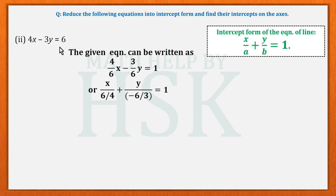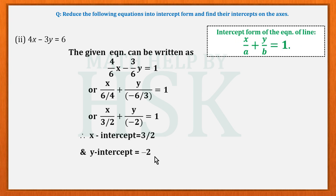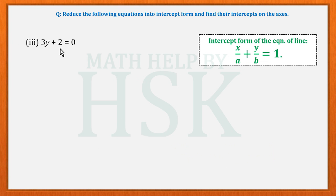It must be noted that if any term carries a negative sign, that negative sign is also taken into the denominator with the constant term. This gives x/(6/4) + y/(−6/3) = 1, which simplifies to x/(3/2) + y/(−2) = 1. Comparing with intercept form, the x-intercept is 3/2 and the y-intercept is −2.